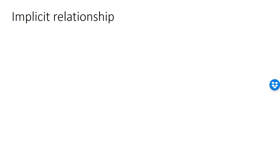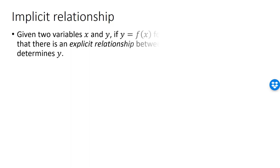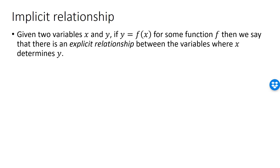Let's say that we have two variables, x and y, which are related somehow. For example, x could be the annual income of an individual, and y could be the amount of tax due. If y is determined as a function of x, then we say that there is an explicit relationship between the variables, where x determines y, or we can say that y is determined by x.